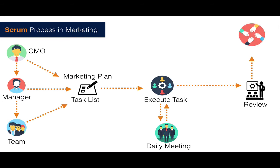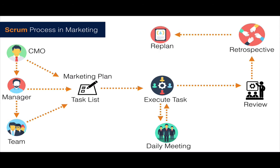Next is the retrospective — you look at interpersonal conflict resolution and general team morale. What have we done? What can we improve on? What were the issues that came up when we were executing that campaign? That's the retrospective. Then you have the re-plan: you look at the marketing plan and work with the CMO to do the re-plan. This is just a brief summary of the Scrum process, as this is a quick guide to implementing Scrum in marketing.